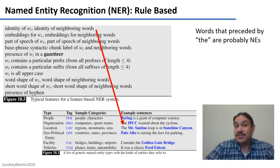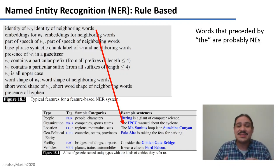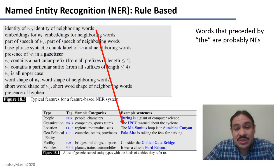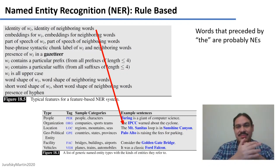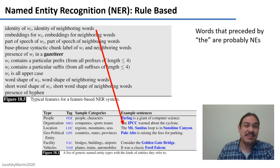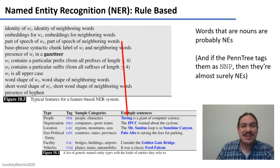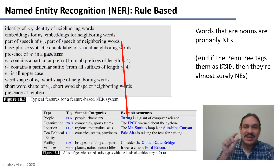How do we get these? Rule-based approaches are fairly effective. As with everything, we first need to build a dataset so that we can build a deep learning solution if we want to. There are many features that we can use — for example, the identity of neighboring words. In English, if a word is preceded by 'the', like in 'the IPCC', this word is probably going to be a named entity. If you have a word that is a noun, it's probably going to be a named entity as well. You can also get help from parsing — for example, the Penn Treebank tags proper names as NNP, and these are almost 100% sure to be actual proper names.